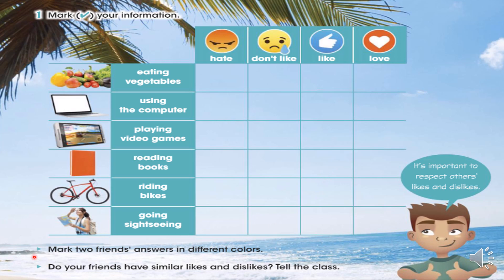También acá dice 'mark two friends' answer in different colors, pero eso va a ser libre en casita. Acá tenemos: eating vegetables — comer verduras; using the computer — usar la computadora; playing video games — jugar juegos de video; reading books — leer libros; riding bikes — manejar bicicletas; coin sizing — hacer turismo.